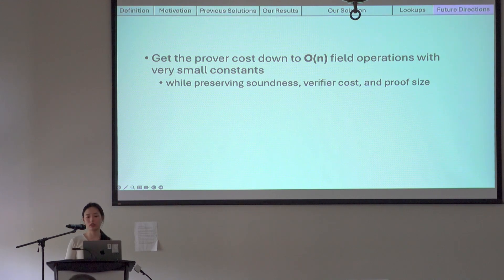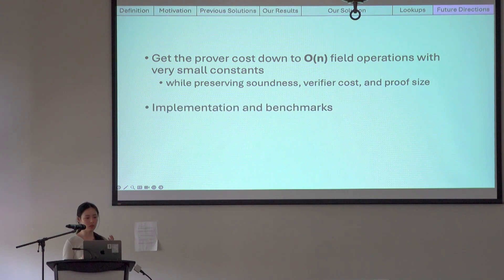So there are a few future directions. First of all, obviously, is to get the prover cost down to actually linear field operations with very small constants while preserving soundness, verifier cost, and proof size. As I was preparing these slides last week, we actually came up with a way, but it puts extra restrictions on the PCS choice. We will also work on implementation and benchmarks, and our paper will be out on ePrint soon.